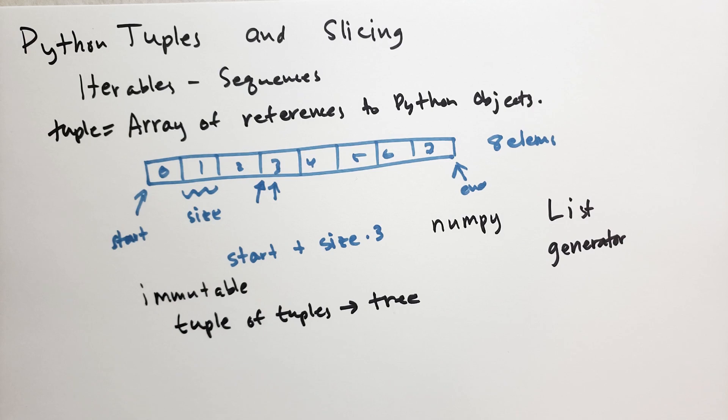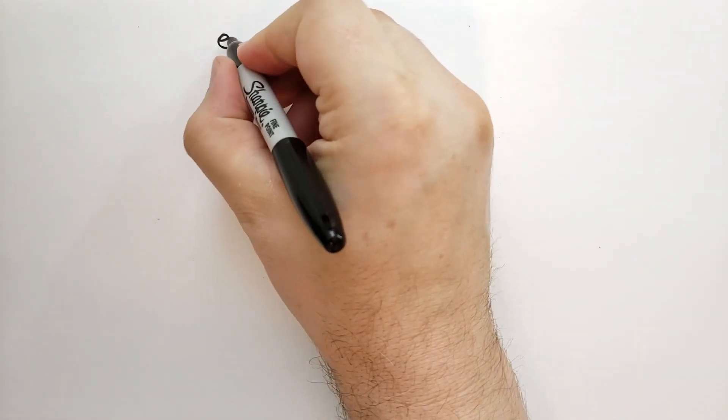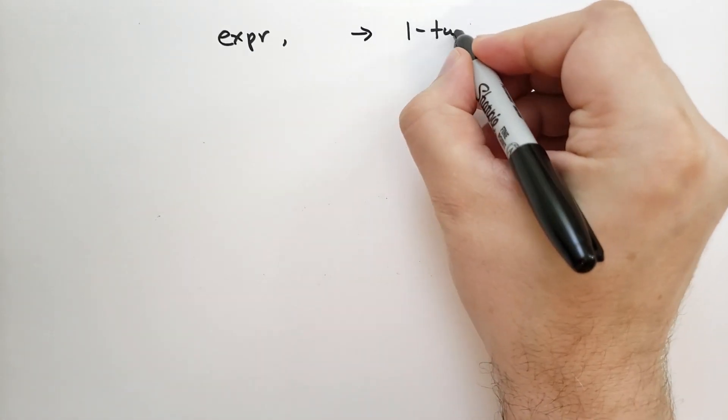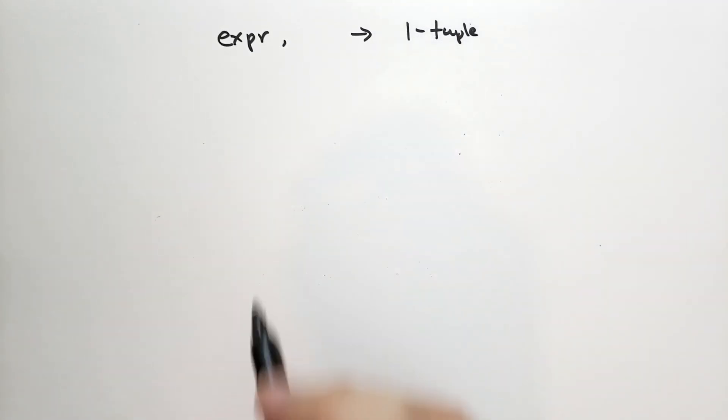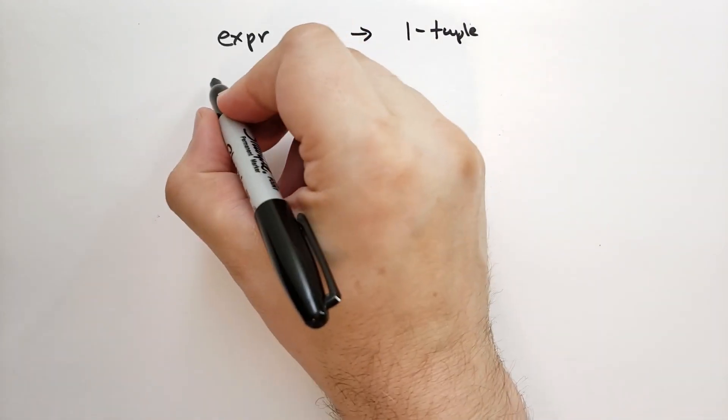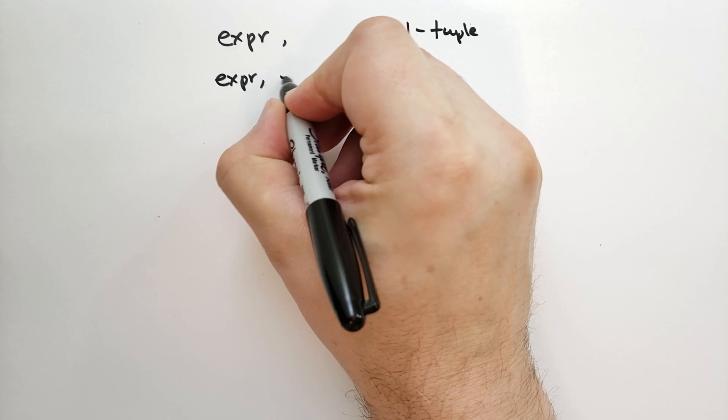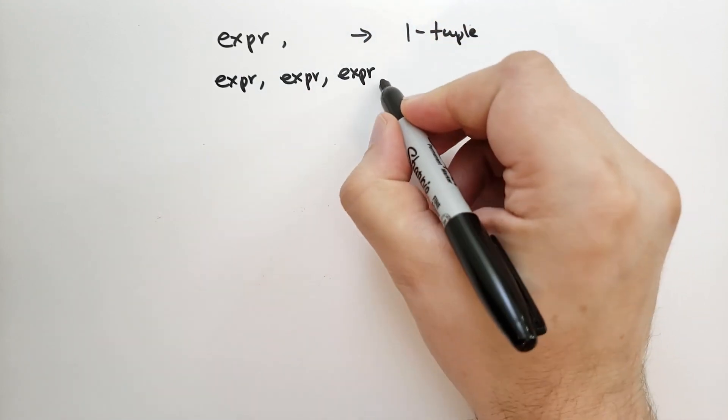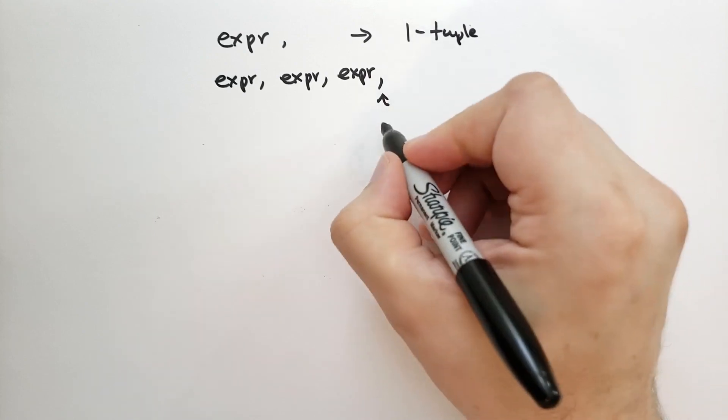Let's talk about how to define or how to describe tuples in Python. There's several ways to define a tuple. The first way is we have a single expression followed by a comma. This is a one tuple, a tuple of length one. You can also have multiple expressions, one after the other, separated by commas. And you can end with a comma, but you don't have to. This is optional.